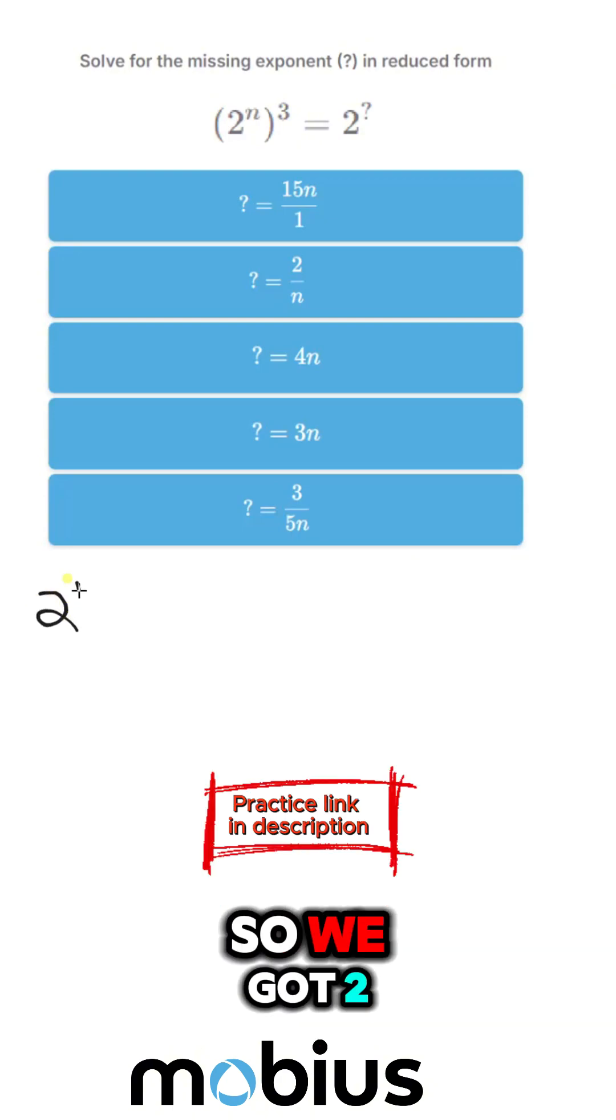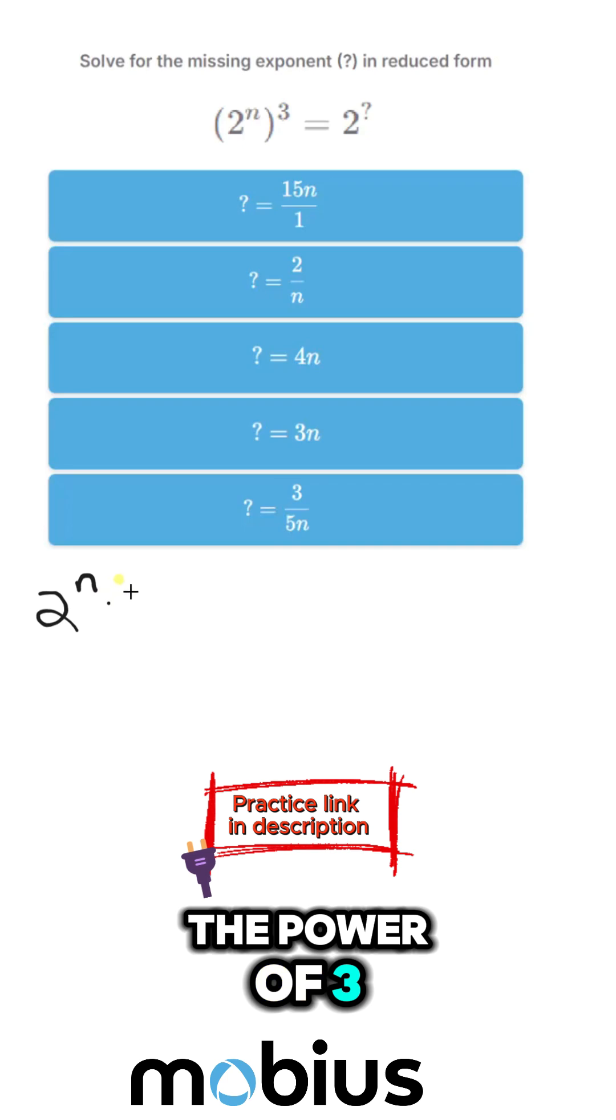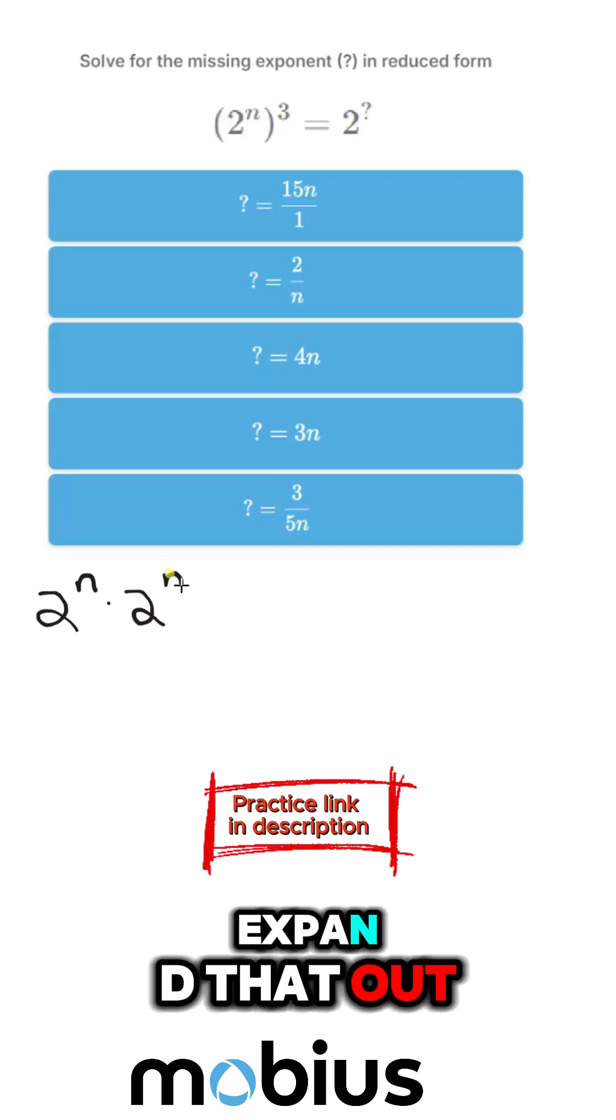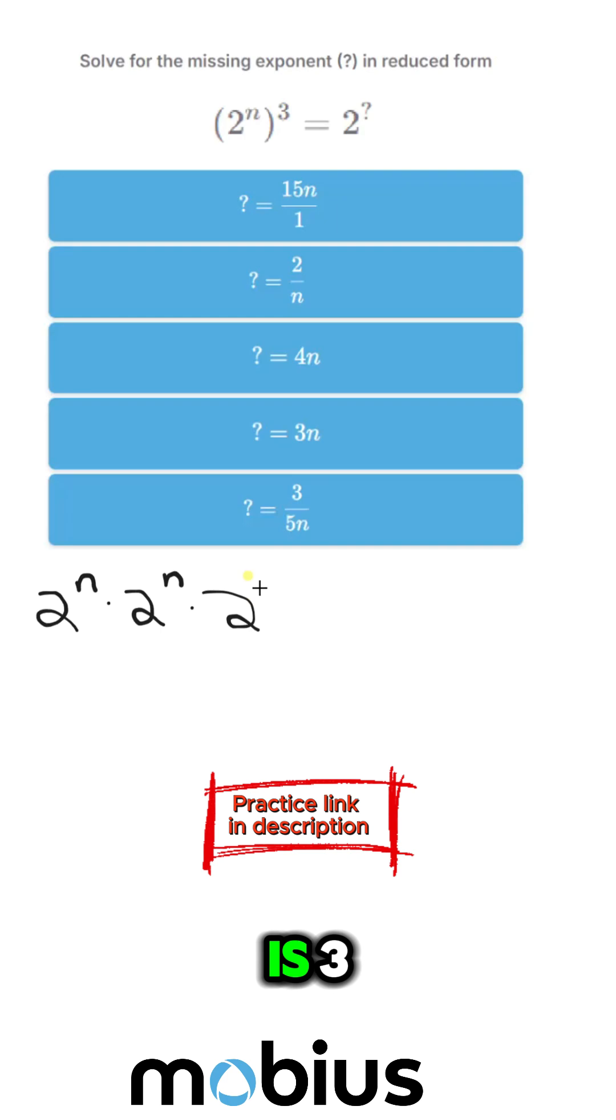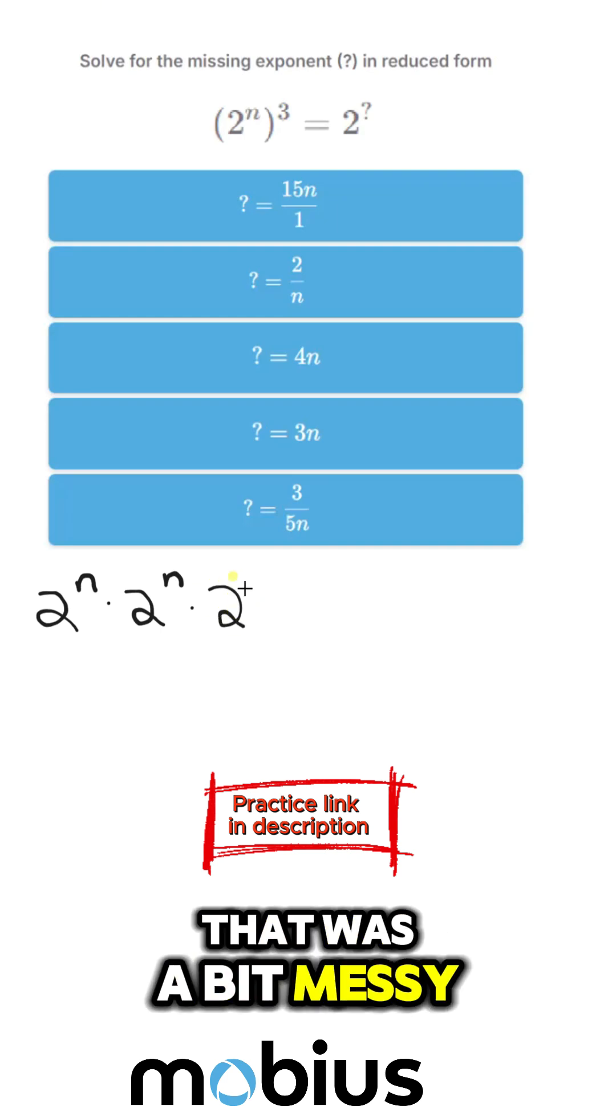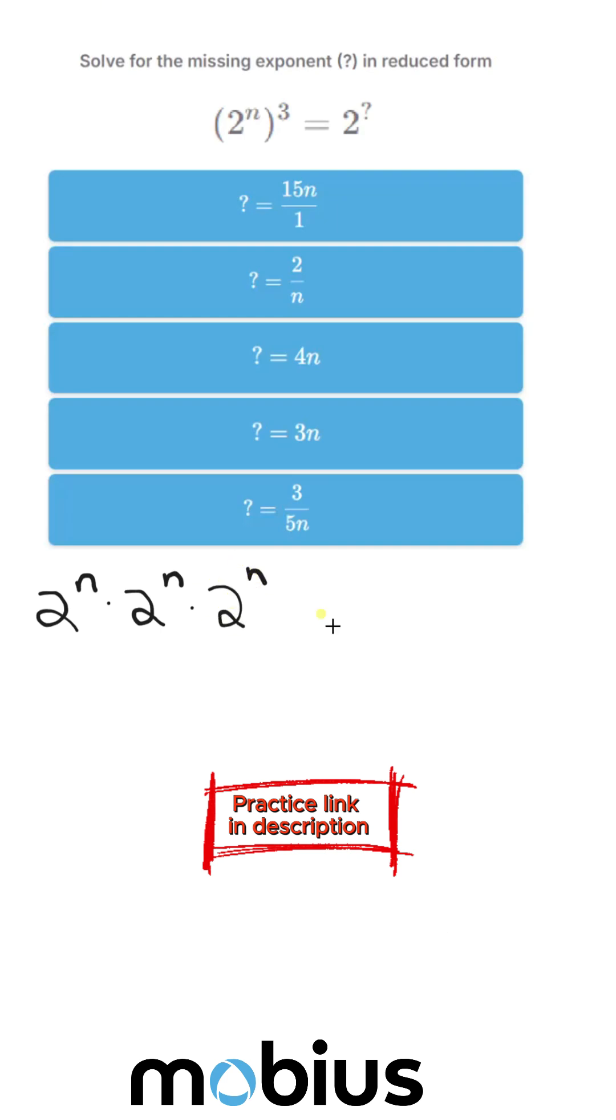So we've got 2 to the n to the power of 3. If I just expand that out, it's 2 to the n, 2 to the n, 2 to the n, which is equal to 2 to our mystery variable.